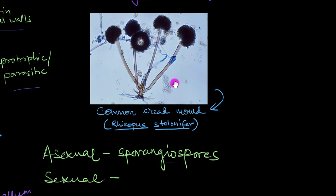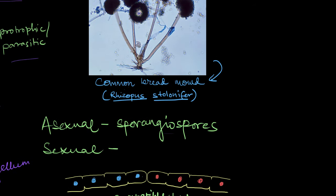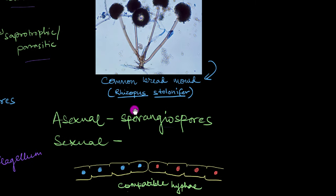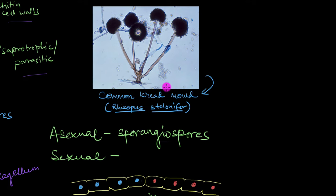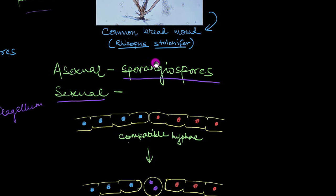Now the most fascinating thing about zygomycetes is how they reproduce sexually. Normally, they reproduce asexually with the help of something called sporangiospores, which are spores that are formed inside a structure called a sporangium. You can actually see a sporangium right over here. So this bulb-like structure here is the sporangium, and inside of this is where the sporangiospores are formed. Sporangiospores are the way to go normally when things are fine. But when the environmental conditions become unfavorable, the fungus resorts to sexual reproduction.